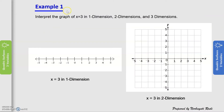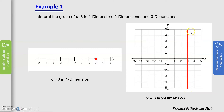We start with Example 1: interpret the graph of x = 3 in 1D, 2D, and 3D coordinate systems. In 1 dimension, x = 3 is just a single point on the number line. In 2 dimensions, x = 3 is a straight line that crosses the x-axis at x = 3 and extends vertically.